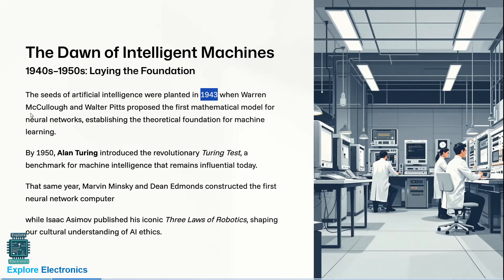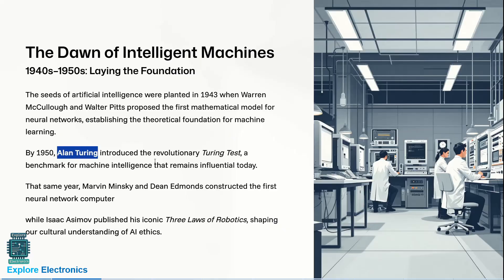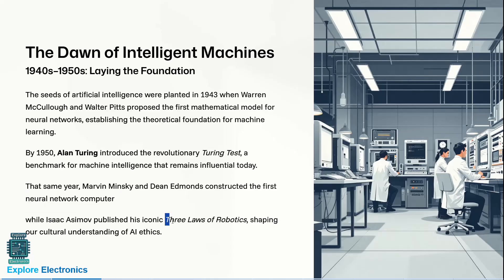the first mathematical model for neural networks, establishing the theoretical foundation for machine learning. In the 1950s, Alan Turing introduced the revolutionary Turing Test, a benchmark for machine intelligence that remains influential even today. That same year, Marvin Minsky and Dean Edmunds constructed the first neural network computer, while Isaac Asimov produced his iconic Three Laws of Robotics,